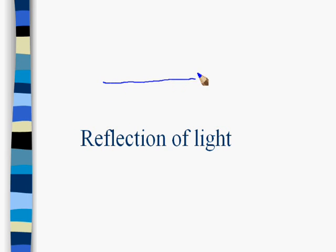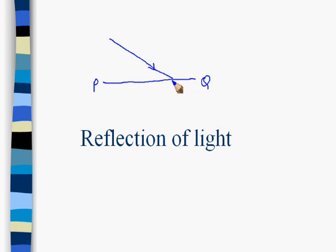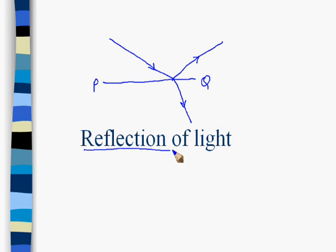The surface is the interface — it is PQ. When a light ray falls on it, some part is absorbed at the interface, which is called the absorbance of light. Some part is transmitted along with a change in direction, which is called refraction of light. And some part is reflected back into the same medium, which is called reflection of light.